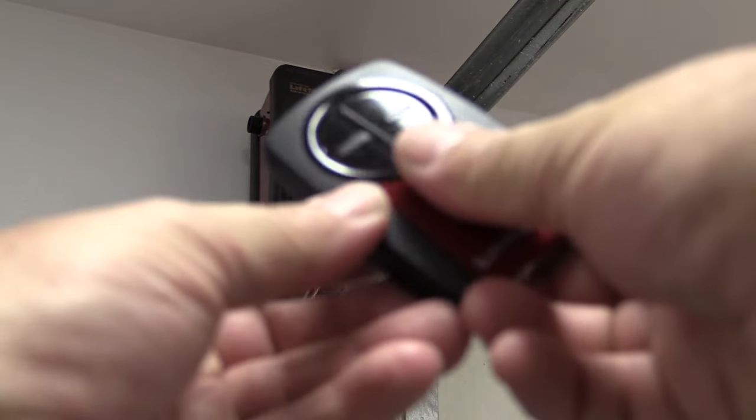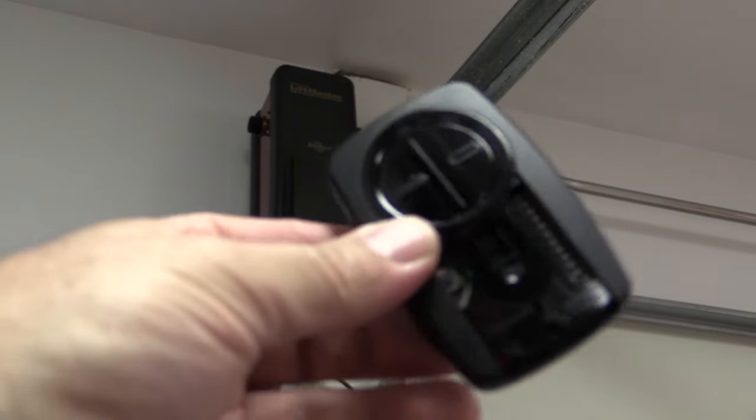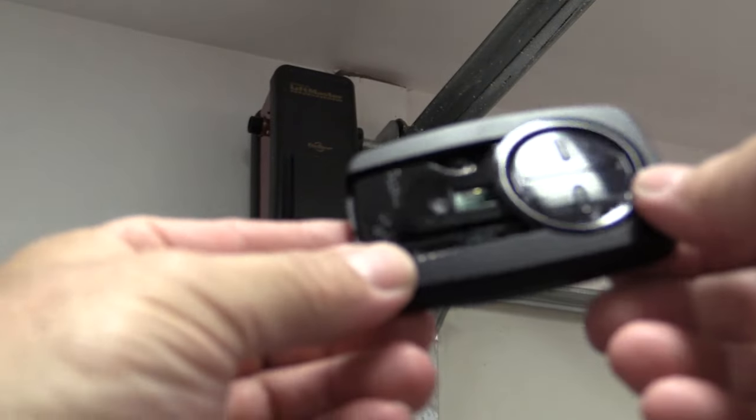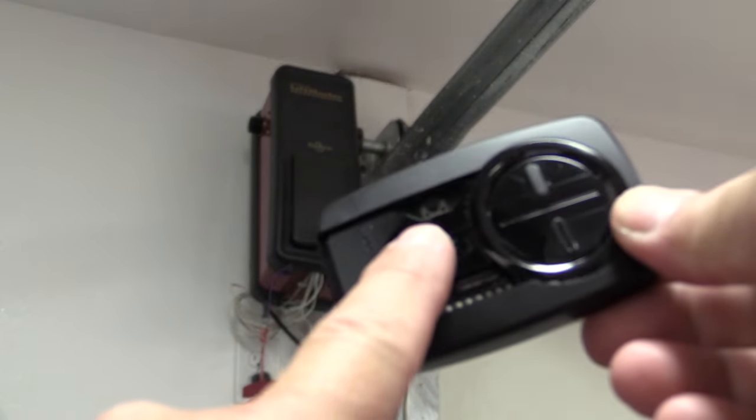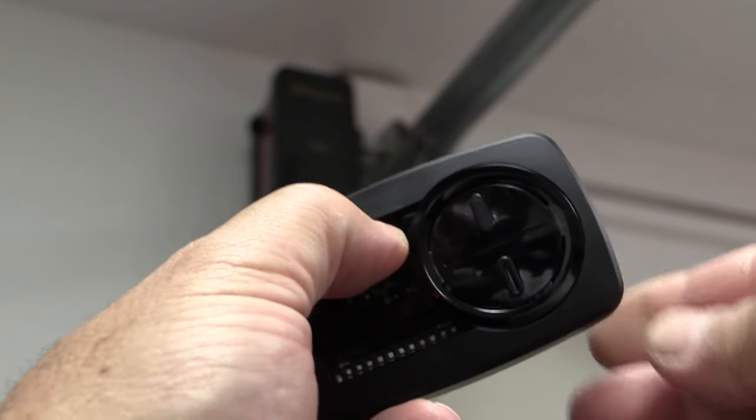Take the remote control, slide open the access panel, locate the program button inside. Depress the program button and hold it until the blue LED on the remote control comes on and lights up solid.